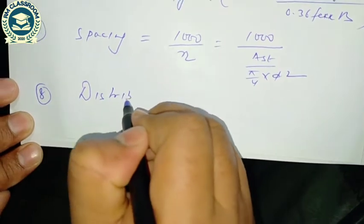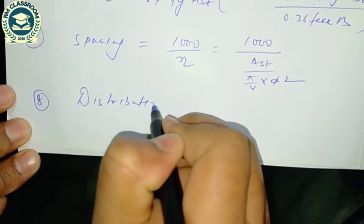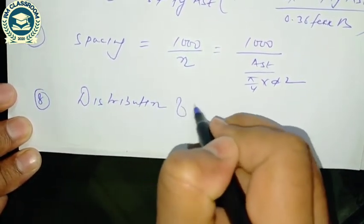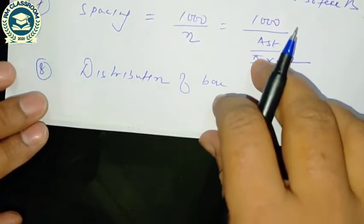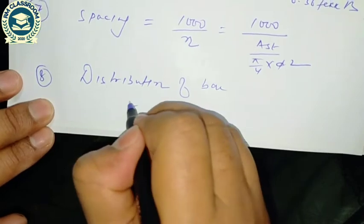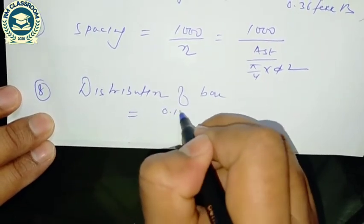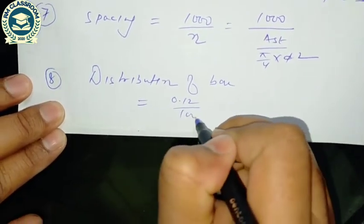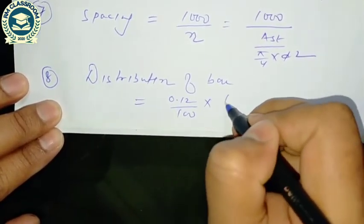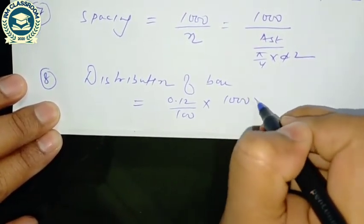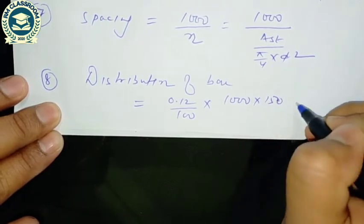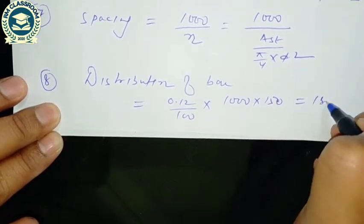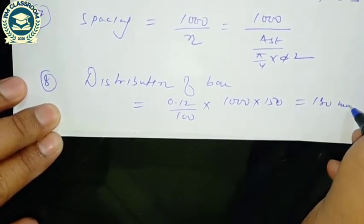Distribution bar area = 0.12/100 × 1000 × 150 = 180mm².